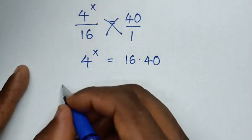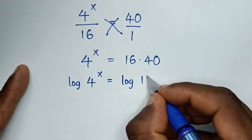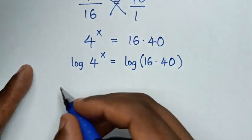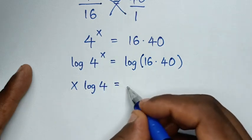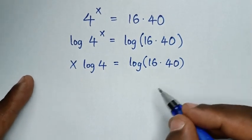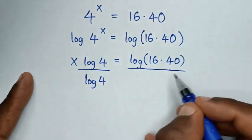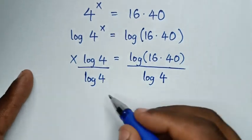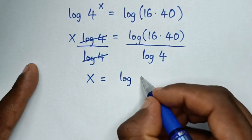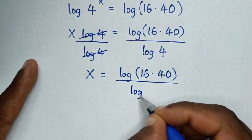Then we apply log on both sides, so it will be log of 4 power of x is equal to log of 16 times 40. This power of x moves to the front, giving x times log of 4 is equal to log of 16 times 40. Then we divide both sides by log of 4, so x is equal to log of 16 times 40 over log of 4.